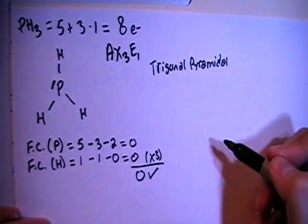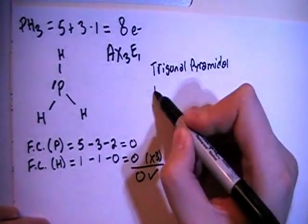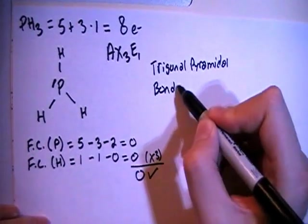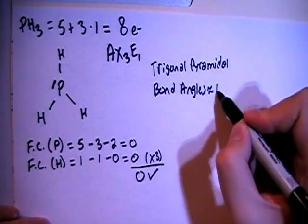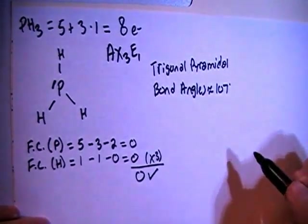And when you have a trigonal pyramidal shape, the bond angles are going to be approximately 107 degrees.